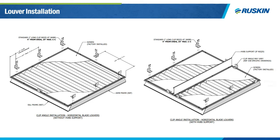Keep in mind the hidden vertical blade supports could be different for your application. Based on the size and wind load, you can have flat strap HVBS, angles, channels, or even tubes for higher wind load or an extremely large assembly. Installation is going to be very similar for each of them. The clip angles are available at Ruskin but are an optional feature for all of our standard stationary louvers, so it's important to make sure you order them on your jobs so they can be provided with exactly the number needed for your application.